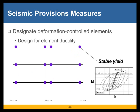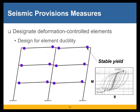The second step is to designate the deformation controlled elements. Once you identify those elements, you design them for element ductility so that they will have a stable yield as the structure deforms. As an example, we show the requirements for the moment-curvature relationship — the moment and angle relationship at beam-to-column connections for moment frames. Those ductility requirements are often prescriptive or require testing or prequalification, like connections for special and intermediate moment frames.